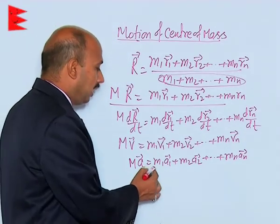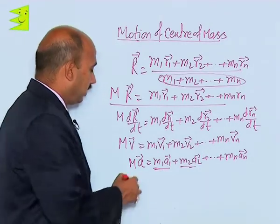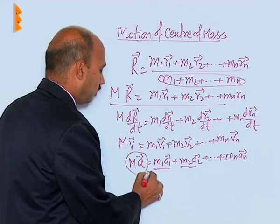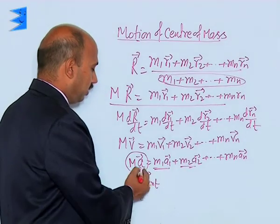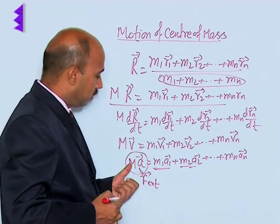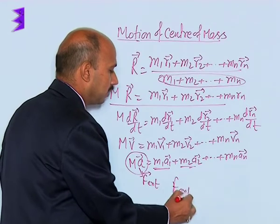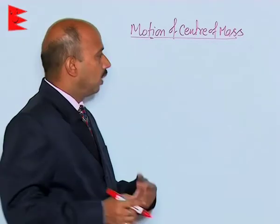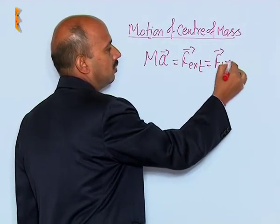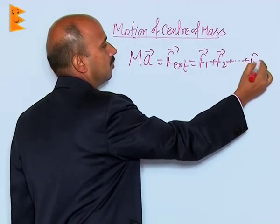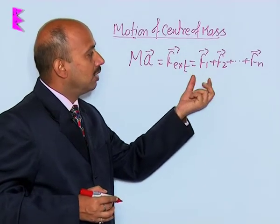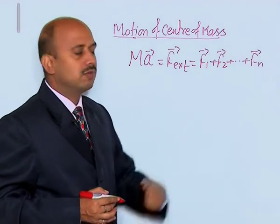Now, here we can take the total force acting on each particle of the system, and this gives the total force on the center of mass. So F_external is equal to M·A. This means the external force acting on the body is the sum of forces F1 + F2 + ... + Fn, where F1 is the total force acting on particle 1, F2 is the total force acting on particle 2, and Fn is the total force acting on the nth particle.